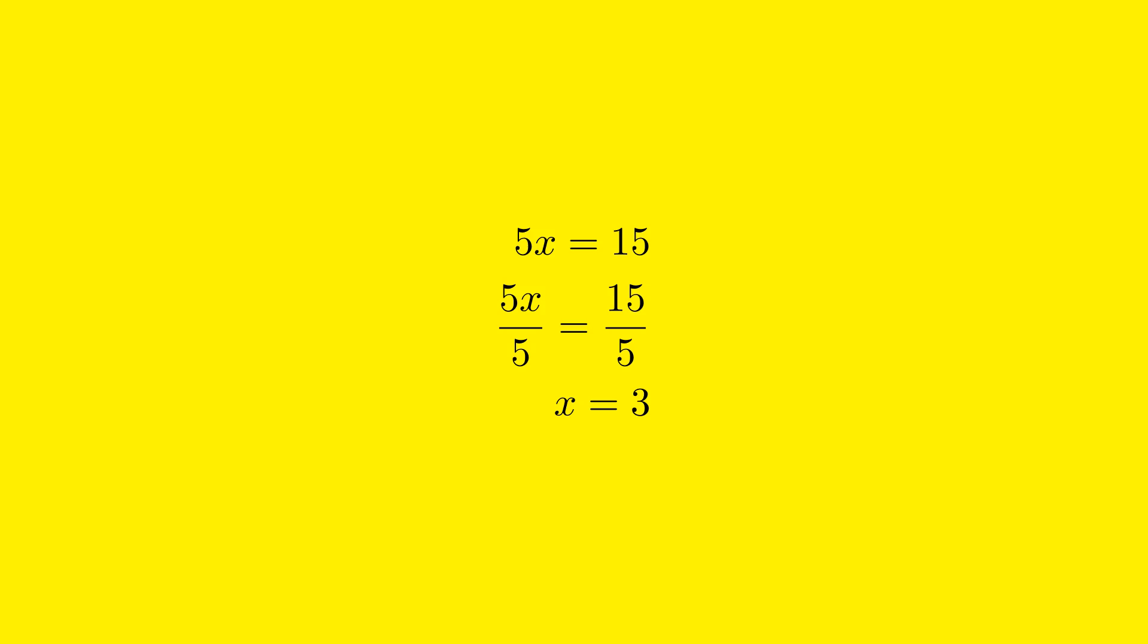Therefore, we will divide both sides of the equation by 5. This operation will cancel out the 5 on the left side, leaving x by itself. Starting with the equation 5x equals 15, we divide both sides by 5.